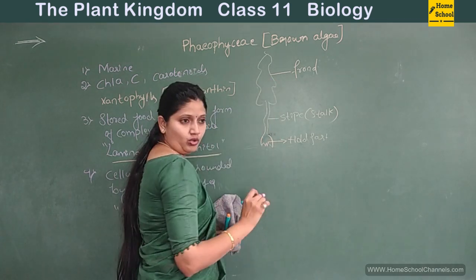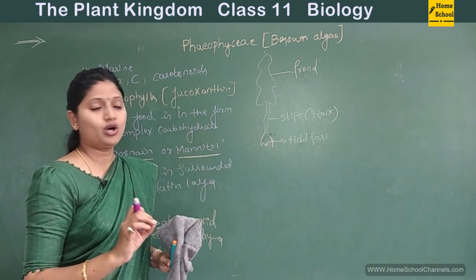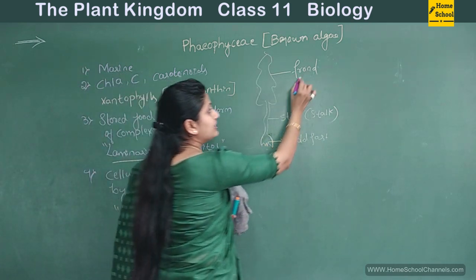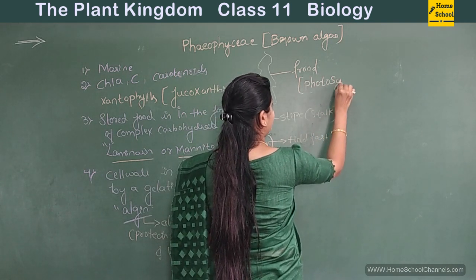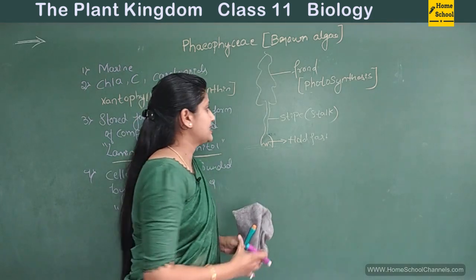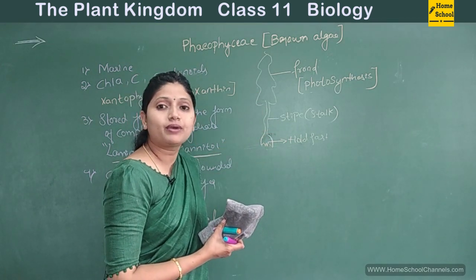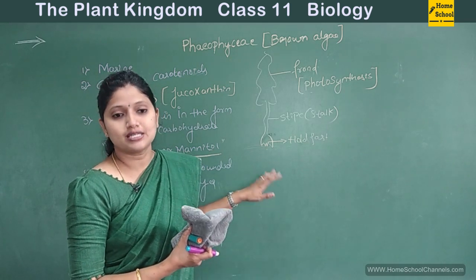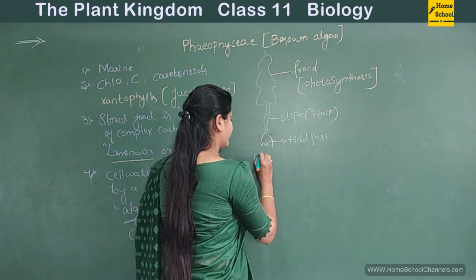By the holdfast, the brown algae are attached to the substratum. The frond functions like a leaf - it is not only looking like a leaf but also carries out photosynthesis. The stipe is a connection providing support so that the plant body is properly erect. This example we are speaking about is Laminaria.